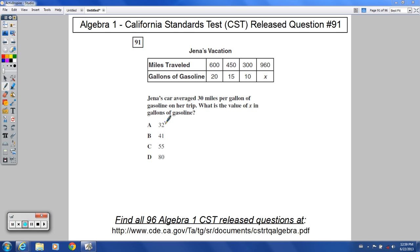This would be release question 91. I'm Mr. Wagner. You'd be wondering how to do this problem. Let's check it out. Jenna's vacation. We've got miles traveled here on the top, and we've got gallons of gasoline on the bottom.